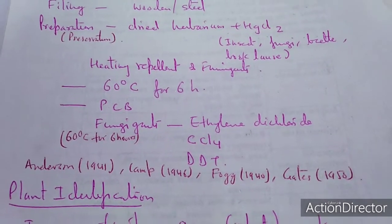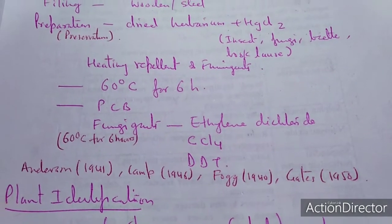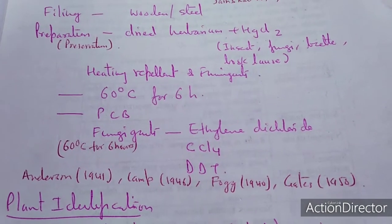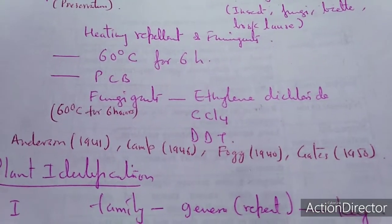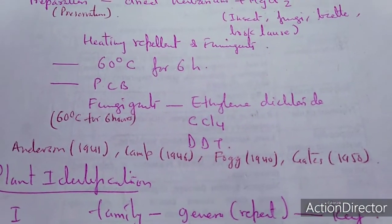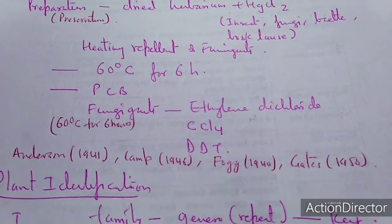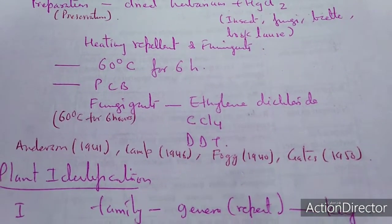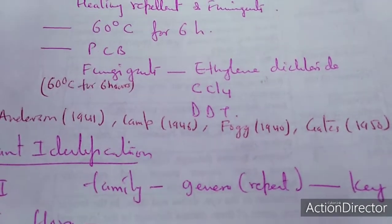PCB — parachlorobenzene — can also be used as a preservative. Fumigants at 60 degrees for six hours. Ethylene dichloride, CCl4, and DDT are also used. There are certain methods associated with this as well.